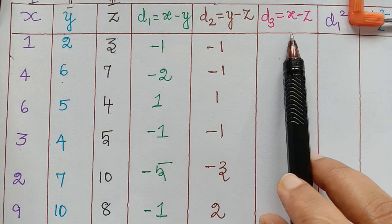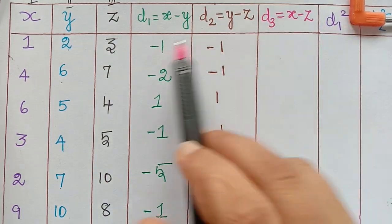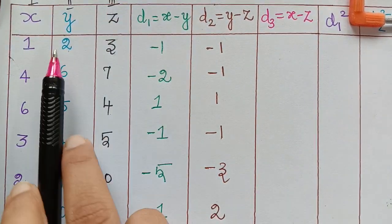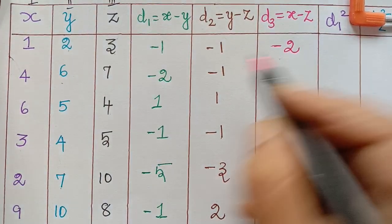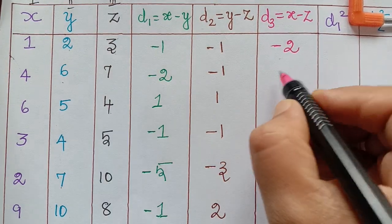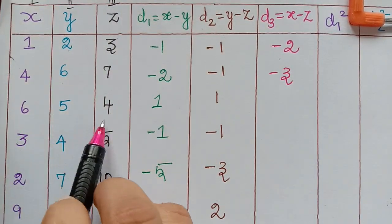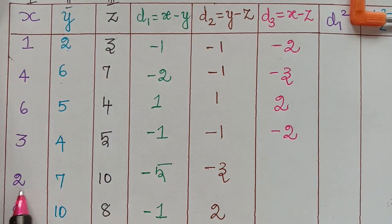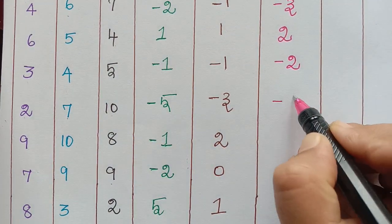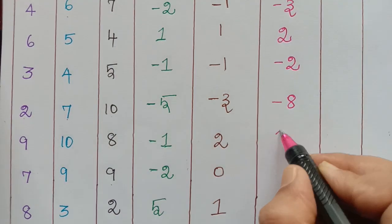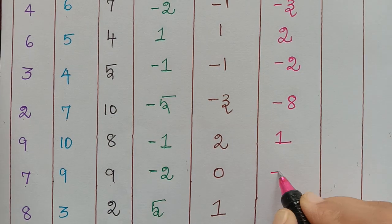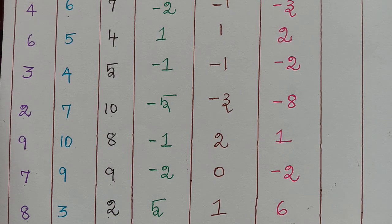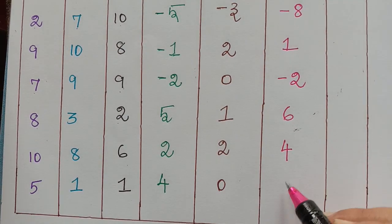Next we find d3, the difference x minus z. So: 1 minus 3 = -2; 4 minus 7 = -3; 6 minus 4 = 2; 3 minus 5 = -2; 2 minus 10 = -8; 9 minus 8 = 1; 7 minus 9 = -2; 8 minus 2 = 6; 10 minus 6 = 4; and 5 minus 1 = 4.